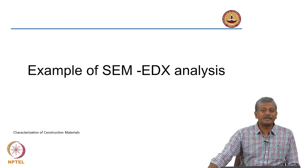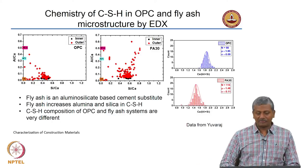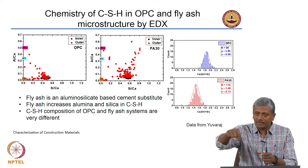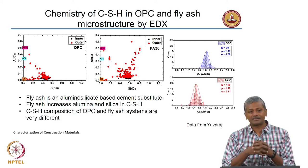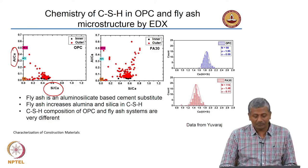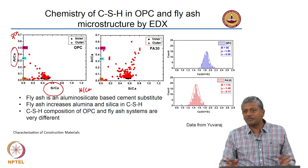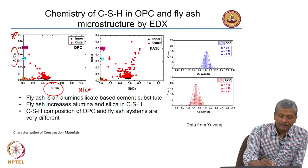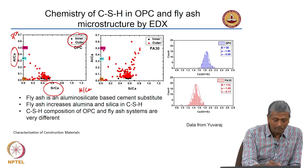I will show examples of SEM-EDX analysis so you can appreciate how the information from X-rays can be used to supplement information from images. This is an example of CSH understanding in OPC and fly ash microstructure by EDX. Several points are taken across the CSH and the atomic ratios of the different elements are analyzed. These are typically plotted as silicon-to-calcium ratio on the x-axis versus aluminum-to-calcium ratio on the y-axis. For inner CSH, the black points are in a very narrow band of about 0.4 to 0.55 silicon-to-calcium ratio, corresponding to a calcium-to-silicon ratio of about 1.9 to 2.1.